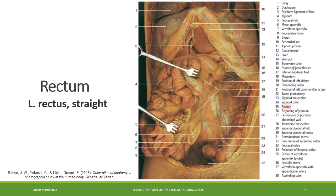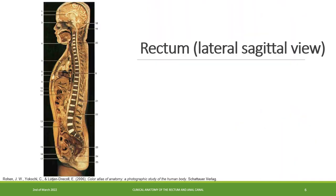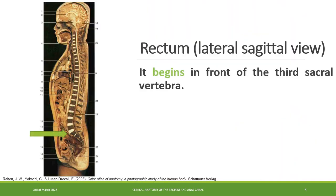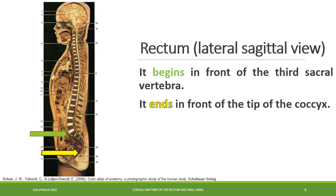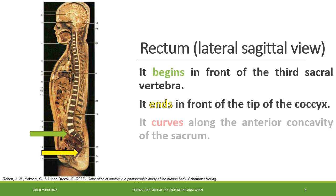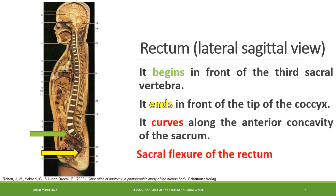The word rectum originates from studies on animals to describe the distal part of the gut. This is its location as seen here in this human cadaver. It begins in front of the third sacral vertebra and ends in front of the tip of the coccyx, curving along the anterior concavity of the sacrum. This is called the sacral flexure of the rectum.